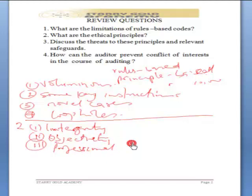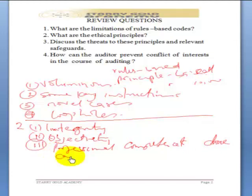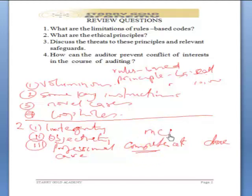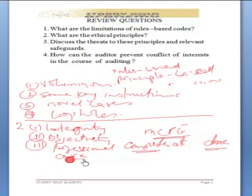The third one is professional competence and due care. The auditor is not supposed to take a job you know you are not competent to do. The auditor is supposed to be continually improving himself as recommended by ICAN — remember the CPE requirements of ICAN, mandatory continuing professional education. You are supposed to be working with due care, with carefulness.